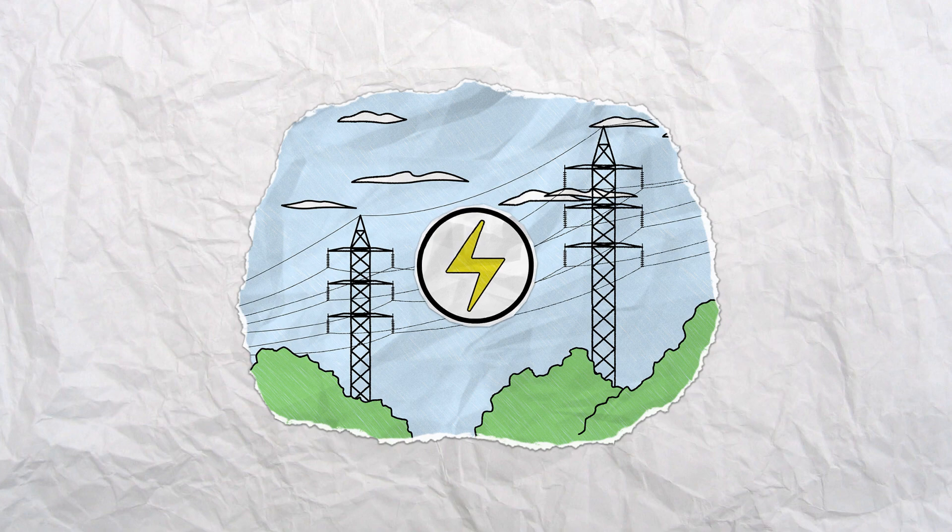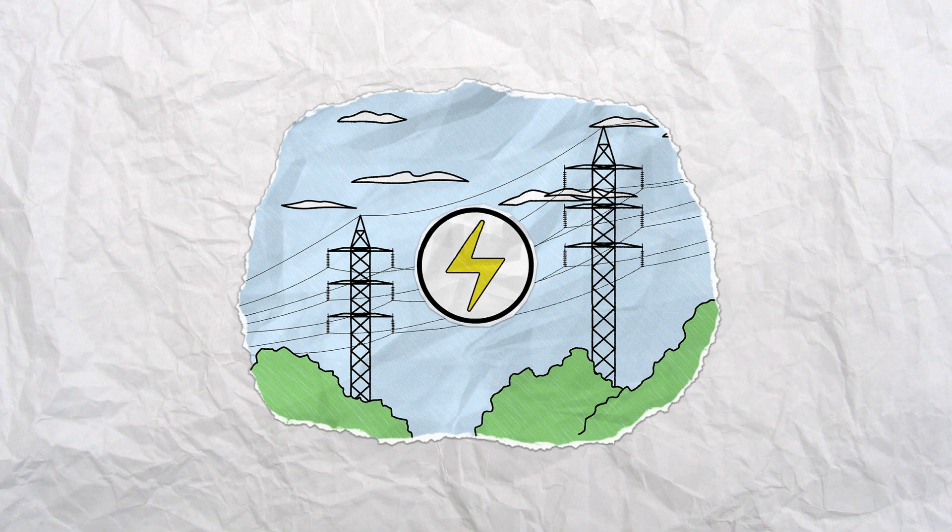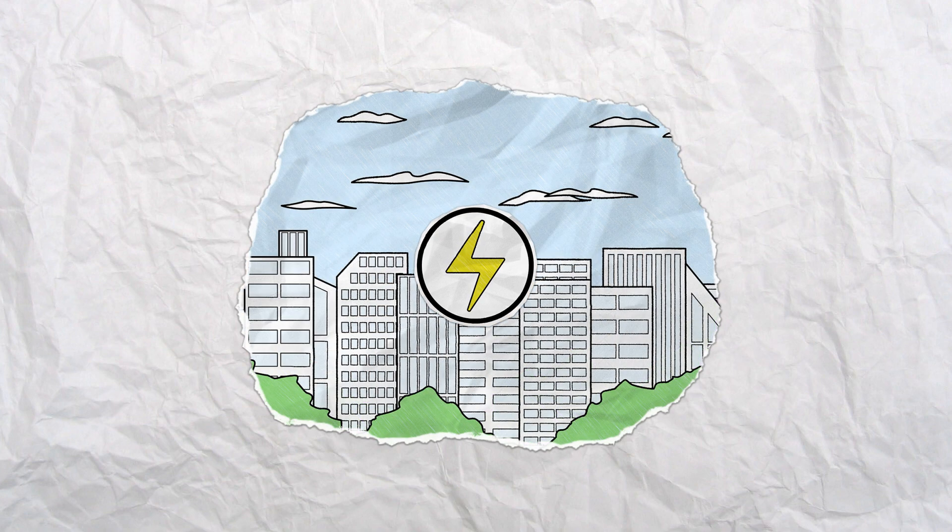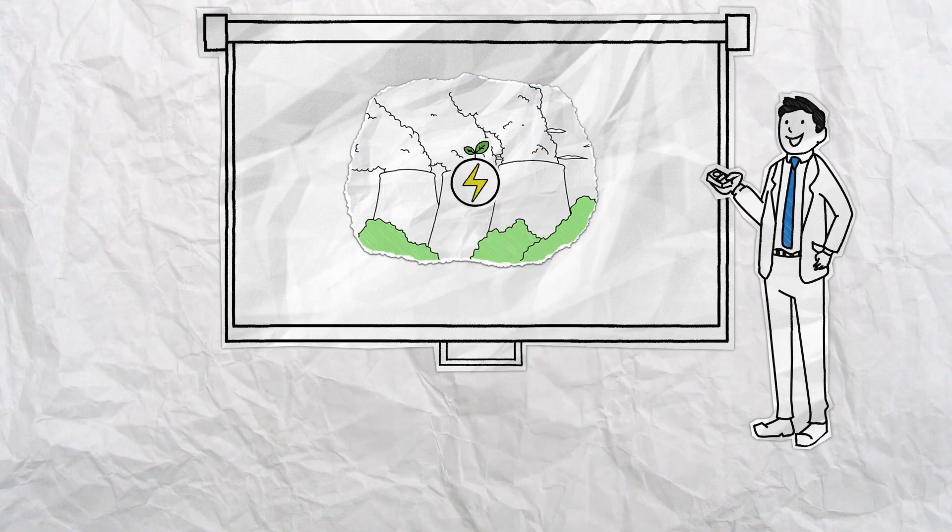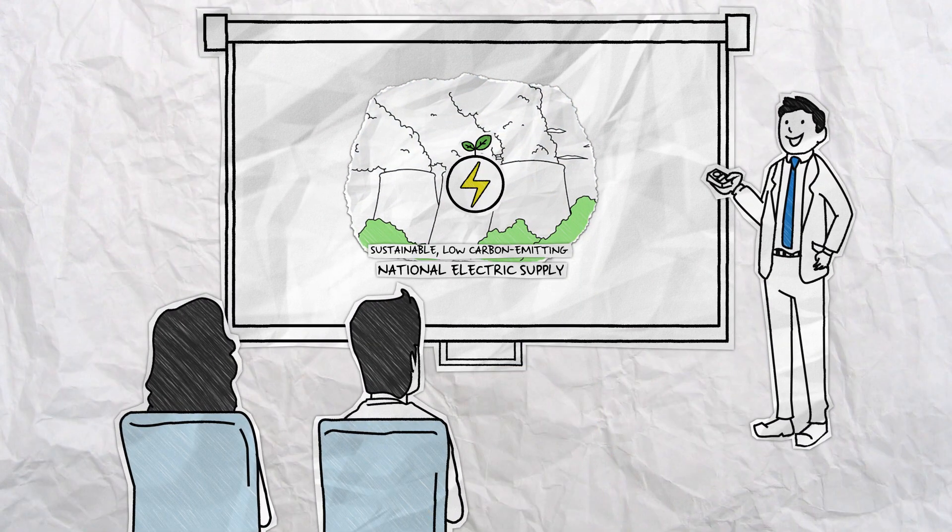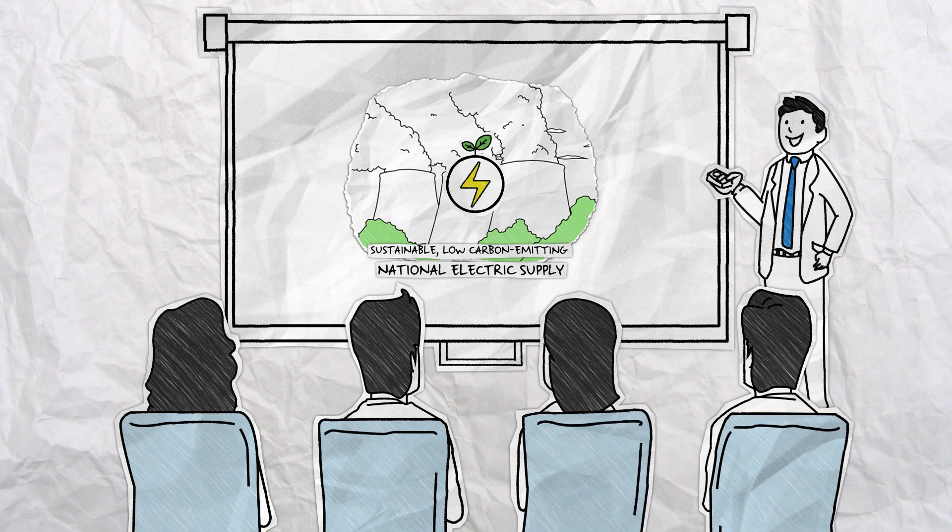To reach this goal, we need to ensure a stable supply of electricity and the improved quality of our air and the global environment. That means creating a sustainable, low-carbon-emitting national electric supply at low cost for producers, distributors, and consumers.